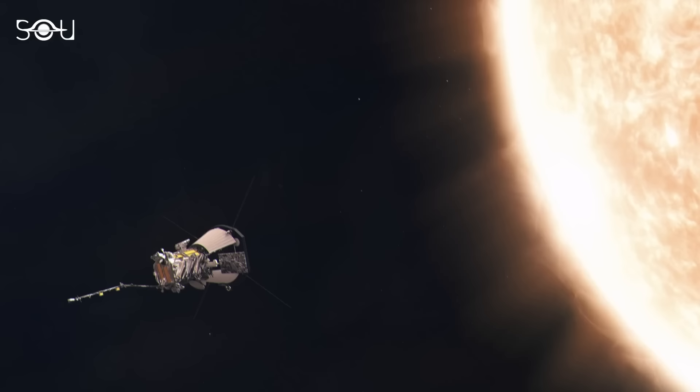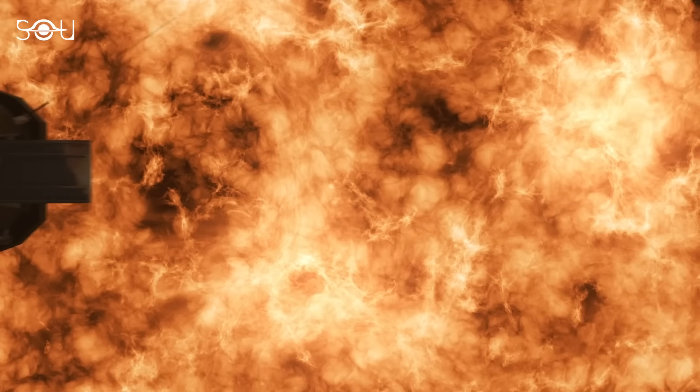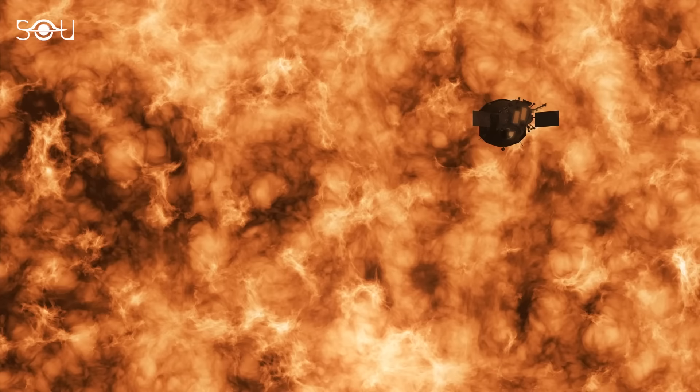So, this is how Parker is gathering a wealth of information without melting. If everything goes as planned, the probe will send data from within 6.16 million kilometers of the sun's surface by the end of the mission. This would reveal the solar secrets at depths that have never been reached before.